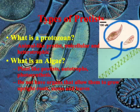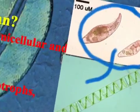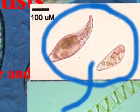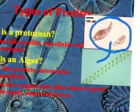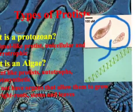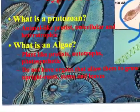If you zoom in on this organism, you can see that even though it might have some green in it, it's mostly non-colored and it's going to use other organisms for its nutrients.